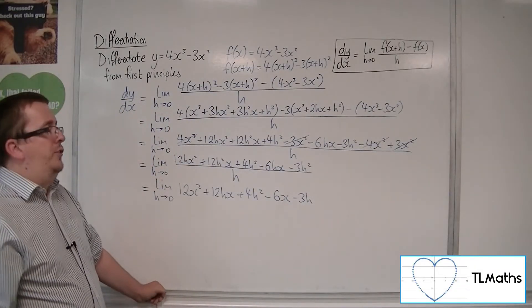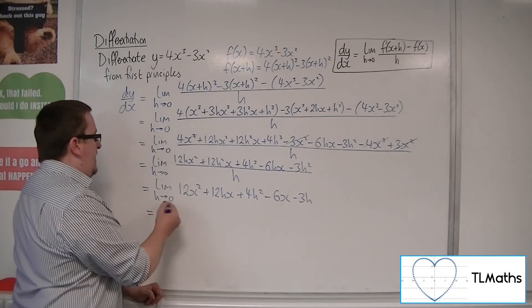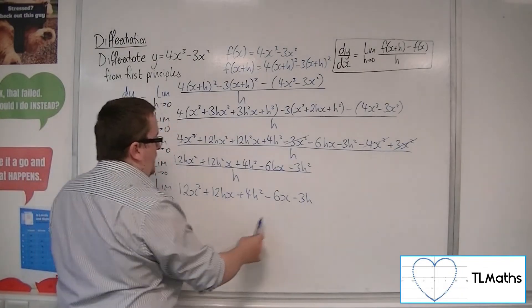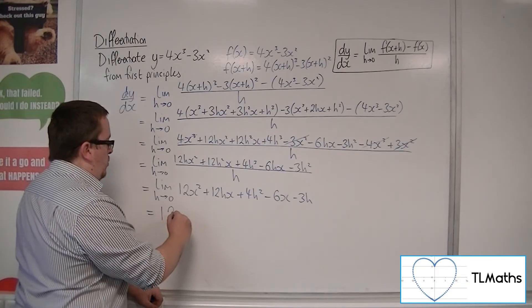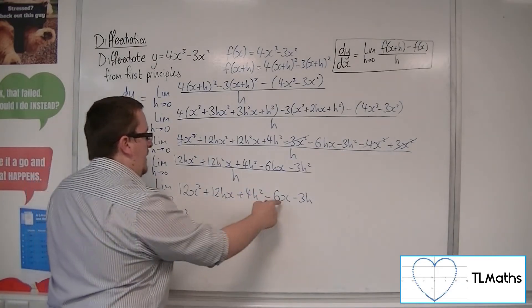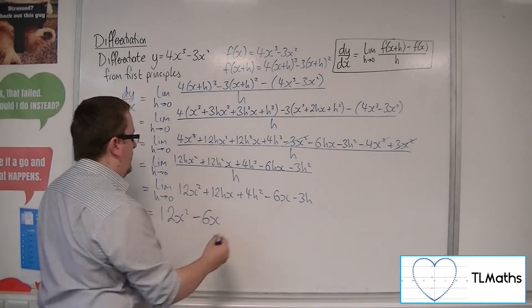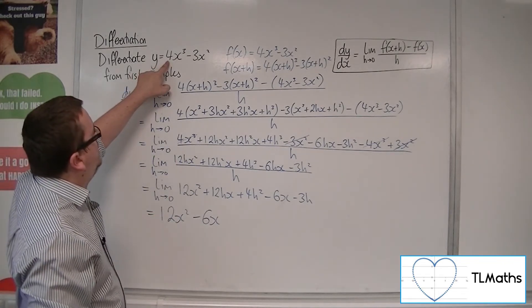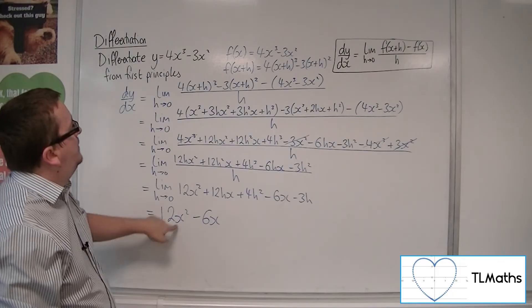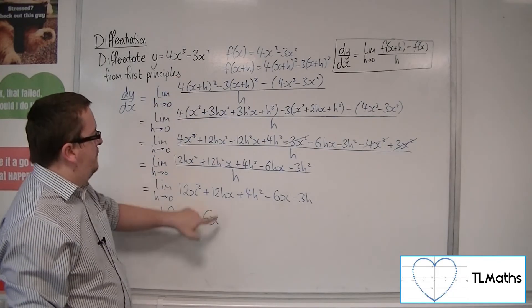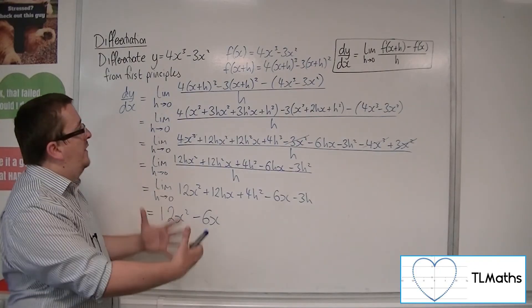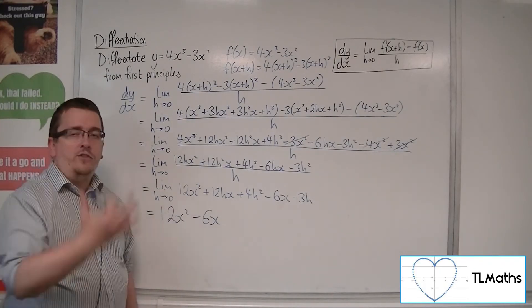Now any term that's got an h in at this point is going to be tending to 0. So that one, that one, and that one, leaving us with 12x squared and the minus 6x. So looking back to what we started with, 4x cubed would differentiate to 12x squared, minus 3x squared differentiates to minus 6x. Okay, and that's how we can show it using differentiation from first principles.